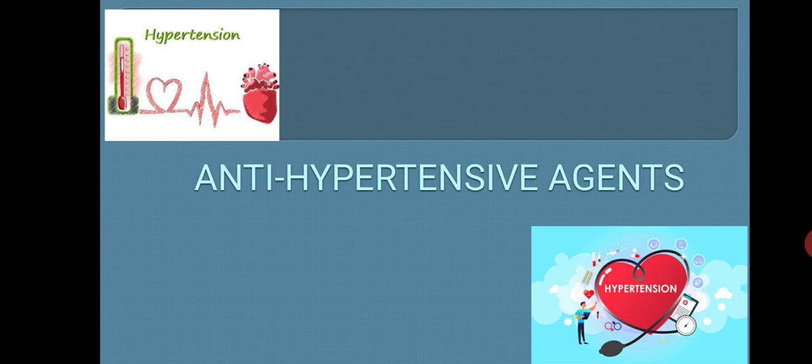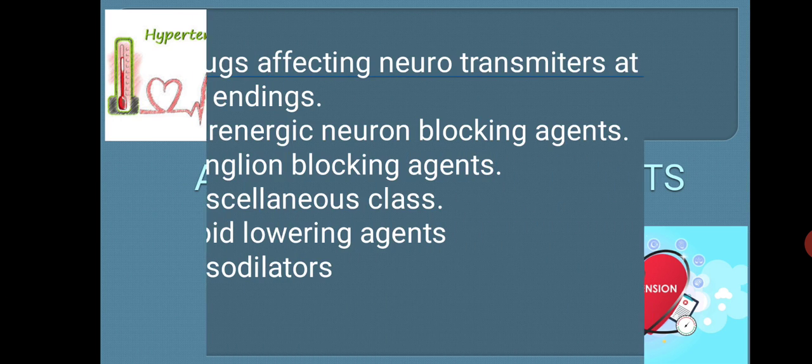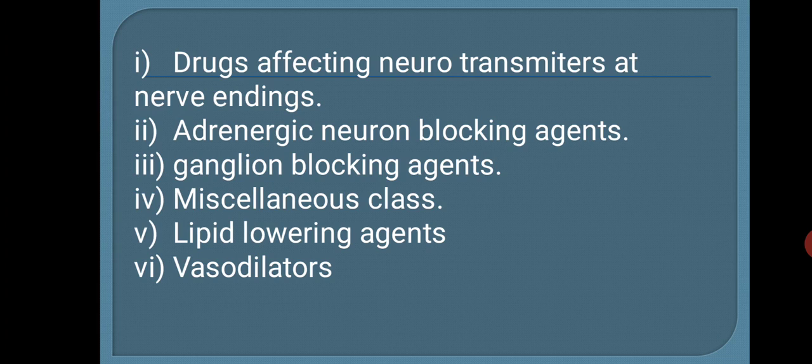In this chapter, we are going to study various classes related to antihypertensive agents, which include: drugs affecting neurotransmitters at nerve endings; adrenergic neuron blocking agents; ganglion blocking agents; miscellaneous classes; lipid lowering agents; and vasodilators.